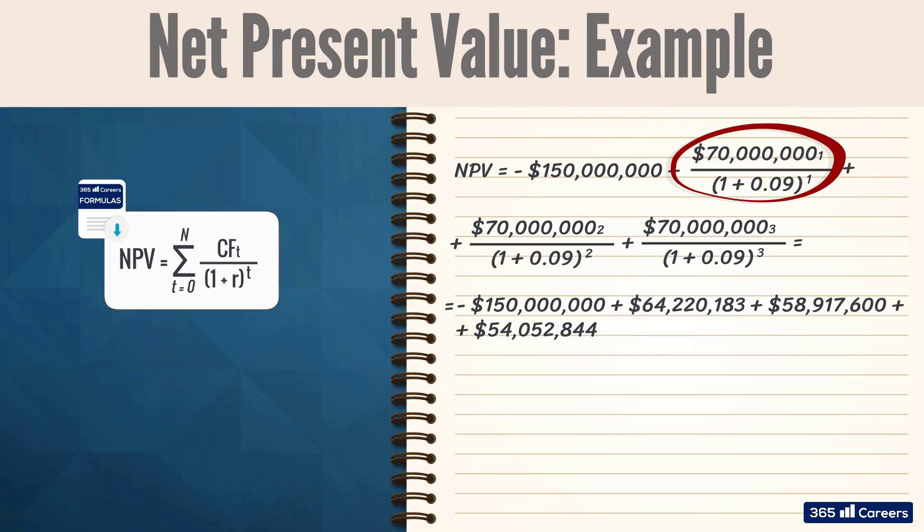which is discounted by 1 plus 9% raised to the power of 1. Similarly, we apply the same procedure to the rest of the cash flows.